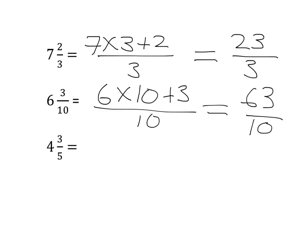Okay, quickly try the last one yourself. Pause the video, turn 4 and 3/5 into an improper fraction. Your answer should look something like this. You should take 4 and multiply it by 5 and add on 3. You're still dealing in fifths. 4 times 5 is 20 plus 3 gives us 23 over 5.